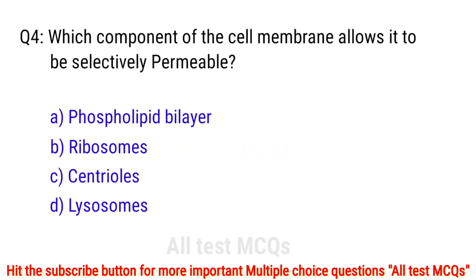Question number 4. Which component of the cell membrane allows it to be selectively permeable? The right answer is option A: phospholipid bilayer.